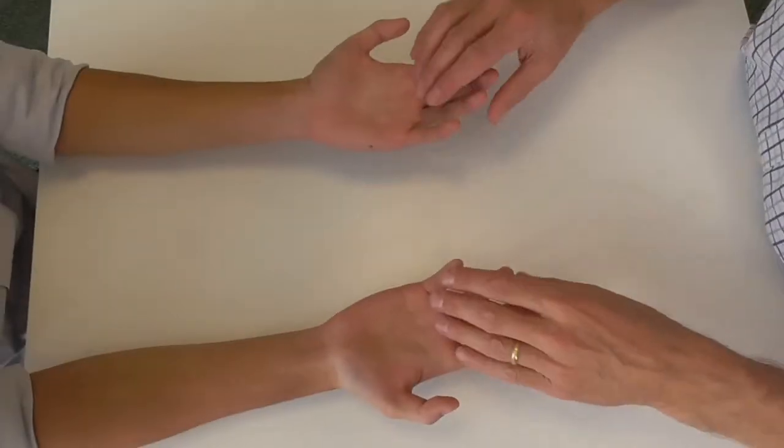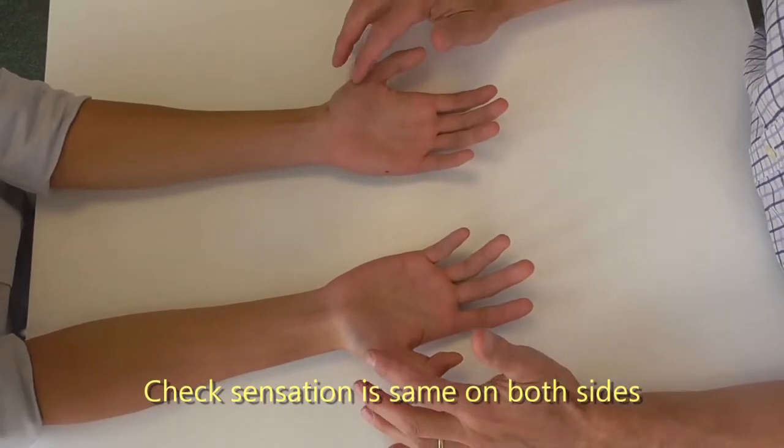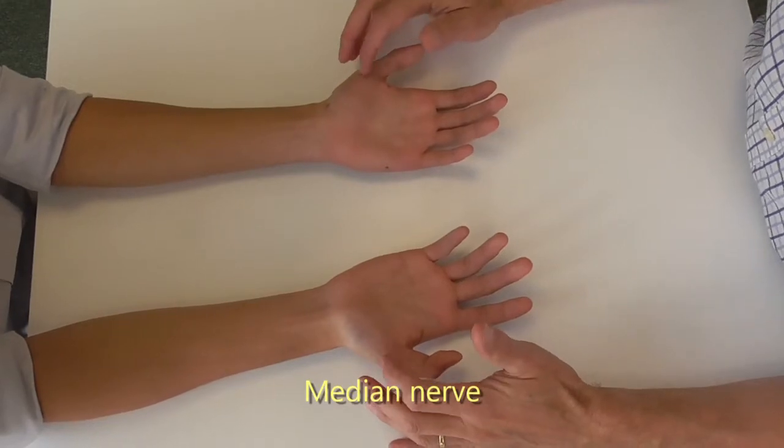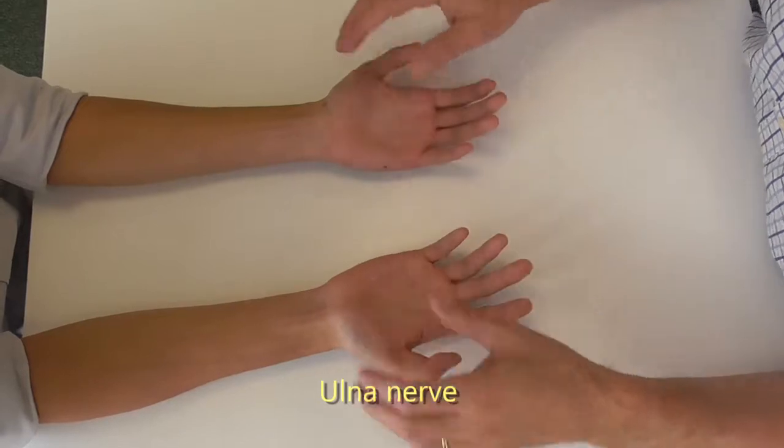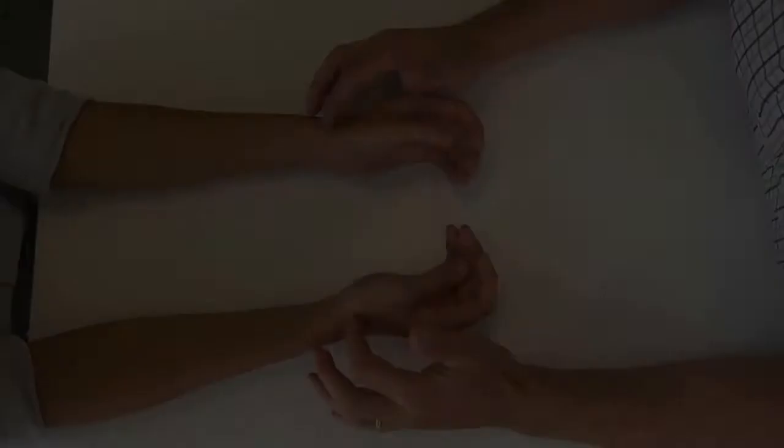I'm now going to assess for sensation, and effectively I'm going to just check that the sensation is the same on both sides. Does that feel the same? Yep. So that's the median nerve. I'm going to assess the ulnar nerve. That feels normal. And then if I just go to the other side here, does that feel the same on both sides? Yes.